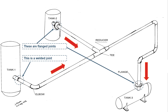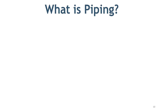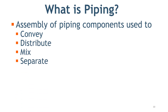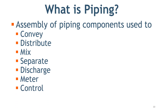Now all three tanks are connected to each other. Before we move forward, let's learn the definition of piping. When piping components are joined to perform some specific activity — such as convey, distribute, mix, separate, discharge, meter, control, or stop the fluid flow — that is known as piping.